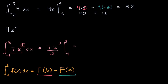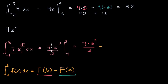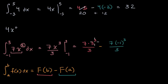Evaluating at our upper bound, it's going to be seven times three to the third, all over three. And then from that, we subtract the antiderivative evaluated at the lower bound — seven times negative one to the third, all over three. The first expression: three to the third is 27, so 27 over three is nine, giving us seven times nine, which is 63. Negative one to the third power is negative one, but we're subtracting a negative, so this is just adding seven over three.